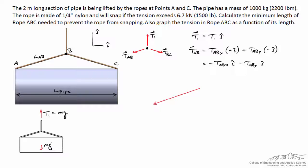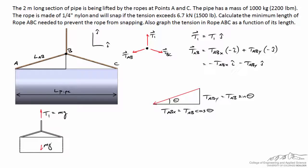We need to figure out the components of TAB in the horizontal and vertical directions by decomposing it. Calling this angle theta, TABX equals TAB cosine(theta), and TABY equals TAB times sine(theta). The value of theta itself is dictated by the length of rope ABC, and by symmetry the same angle theta appears on both the left and right sides.